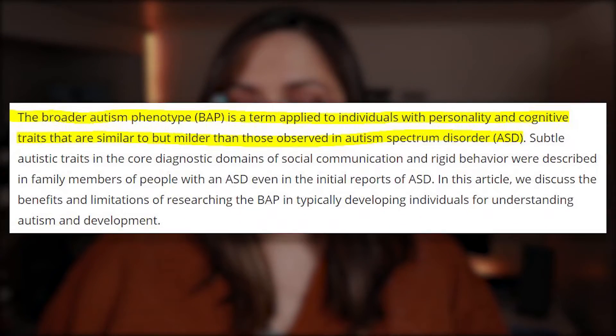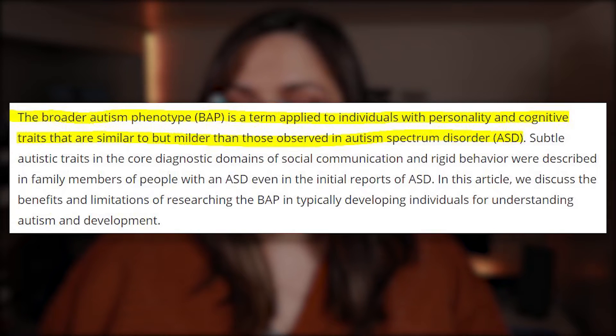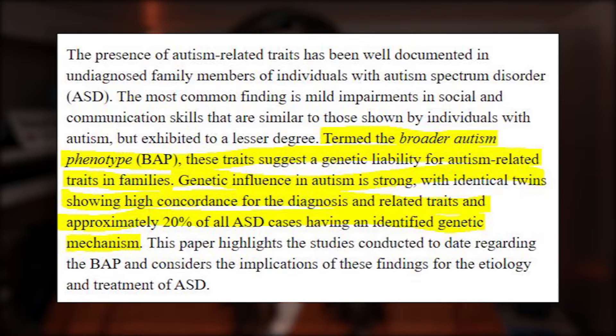Now that you have a decent grasp of what a phenotype is, let's talk about what broad autism phenotype means. One article puts it this way: the broader autism phenotype, or BAP, is a term applied to individuals with personality and cognitive traits that are similar to, but milder than, those observed in autism spectrum disorder, or ASD. Another paper adds that these traits suggest a genetic liability for autism-related traits in families. Genetic influence in autism is strong, with identical twins showing high concordance for the diagnosis, and approximately 20% of all ASD cases have an identified genetic mechanism.